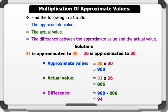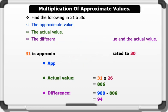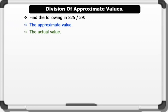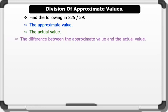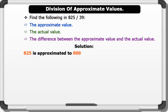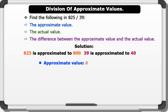The difference between the actual value and the approximate value is 900 minus 806 equals 94. That's very good. Example 4: Find the approximate value, actual value, and the difference for 825 divided by 39. Solution: Following the approximation rules, 825 is approximated to 800 and 39 is approximated to 40.